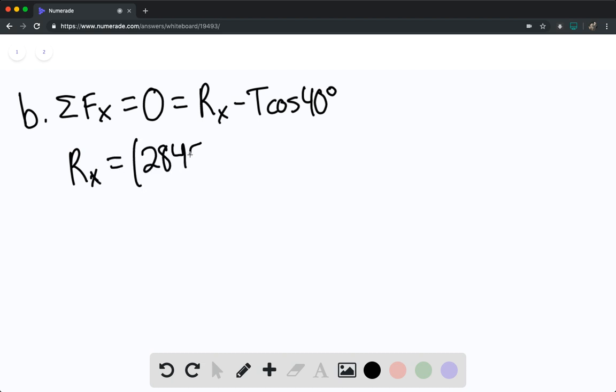For part b, they want us to find the reaction forces. The sum of forces in the x direction equals 0, which means that R sub x equals T cosine of 40 degrees, which equals 284,500 times cosine of 40 degrees, equaling 217,940 newtons.